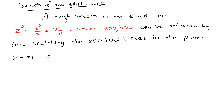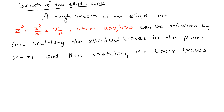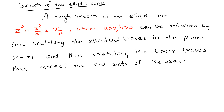Then sketching the linear traces that connect the endpoints of the axes of the ellipses — connecting the endpoints of the axis of the ellipse to the origin along the z-axis.